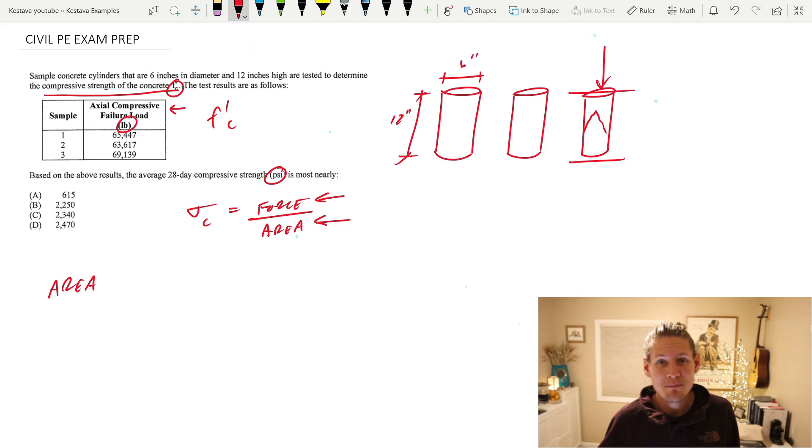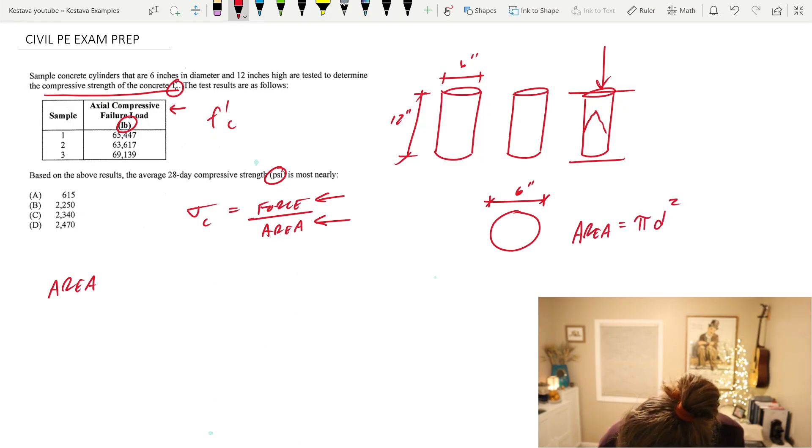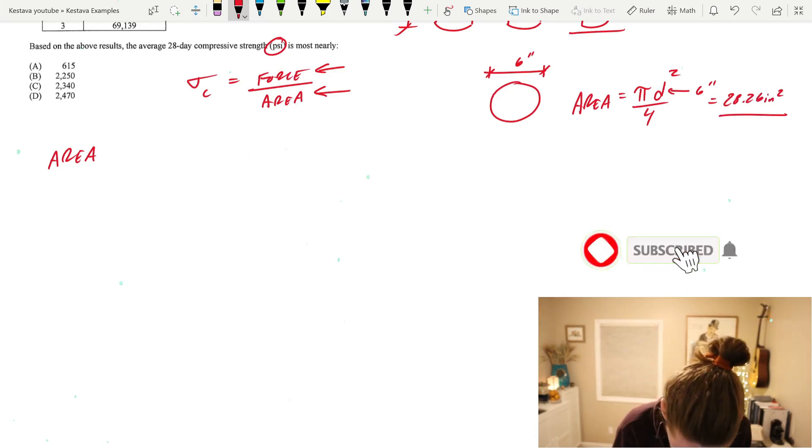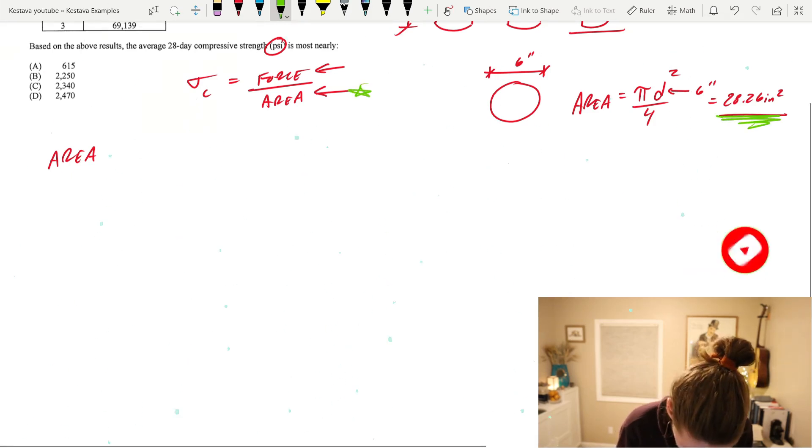I sound like a broken record, I know, but this is the big one for all of you for the PE exam, at least in my opinion - understanding stress. The area is just going to be based on the cross-sectional area of our tested cylinders. And it was specified above that we had a diameter of six inches. So area equals pi D squared over four. D is six inches. That gets us 28.26 inches squared.